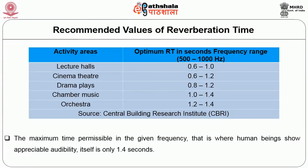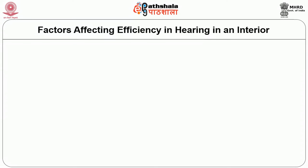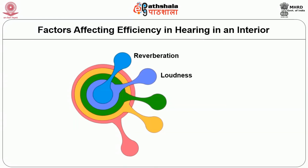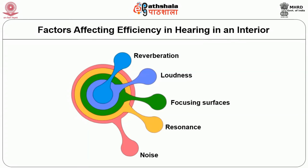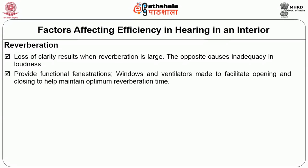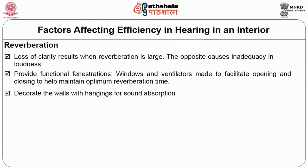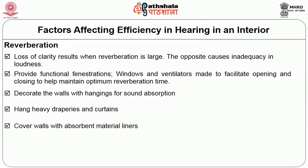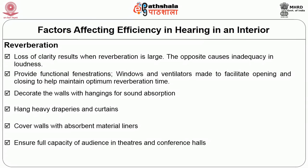All these factors have to be considered in designing space. Factors affecting efficiency in hearing in an interior are reverberation, loudness, focusing surfaces, resonance, and noise. For reverberation: loss of clarity results when reverberation is large, while the opposite causes inadequacy in loudness. To control reverberation, provide functional fenestrations — windows and ventilators made to facilitate opening and closing — to maintain optimum reverberation time. Decorate walls with hangings for sound absorption, hang heavy draperies and curtains, cover walls with absorption material liners, ensure full audience capacity in theatres and conference halls, and use floor coverings especially carpets or accent rugs.